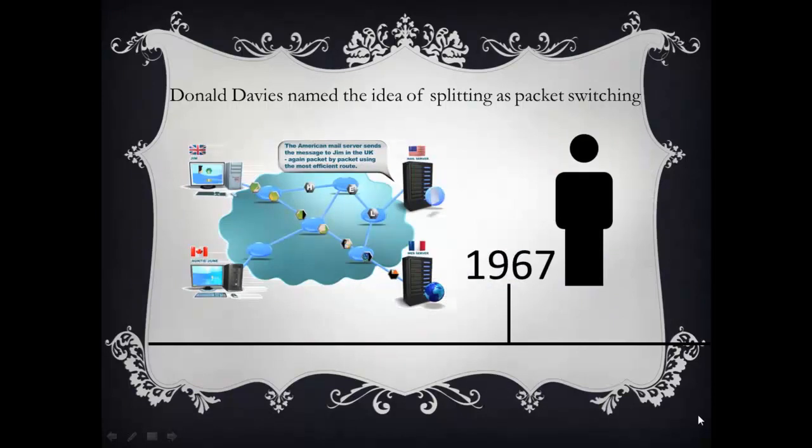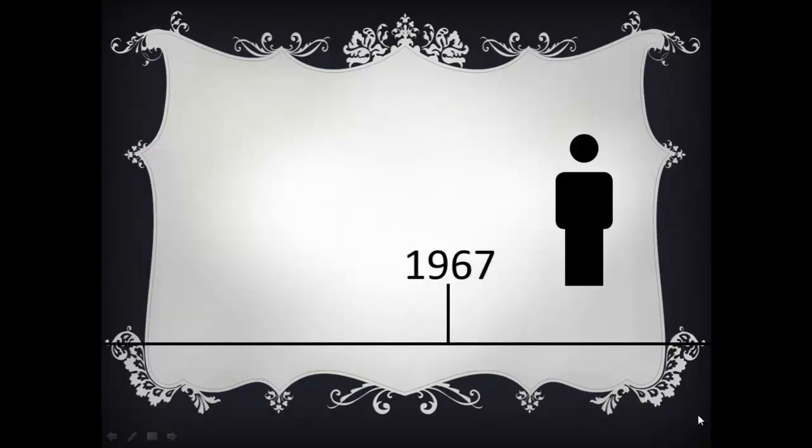ARPANET facilitated the first packet switching between four universities: UCLA, Stanford Research Institute, UC Santa Barbara, and the University of Utah. By this network, four computers were connected. In October 1969, the first message was sent over ARPANET, and that was just 'login'.